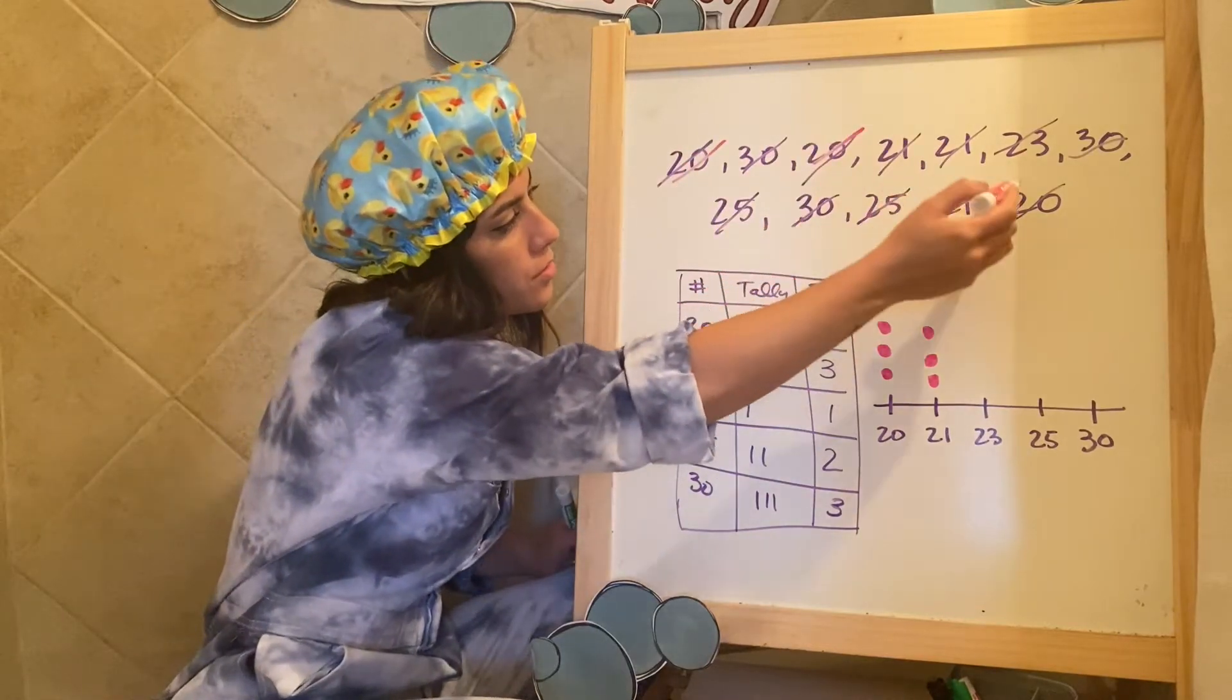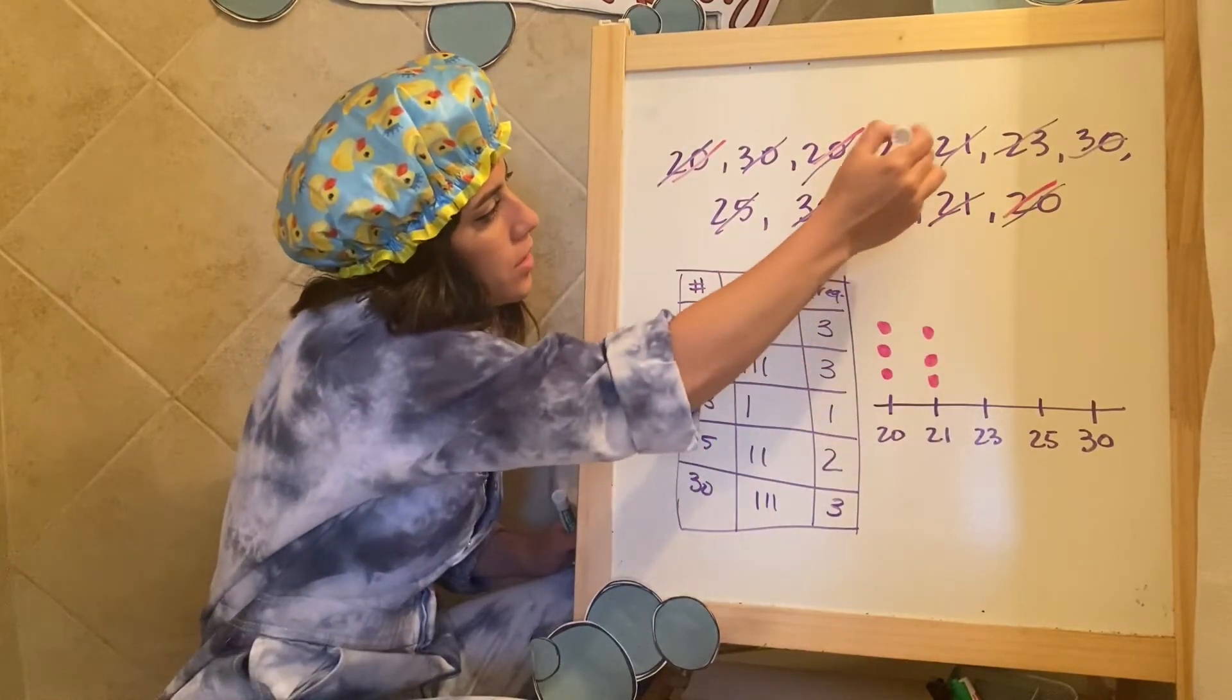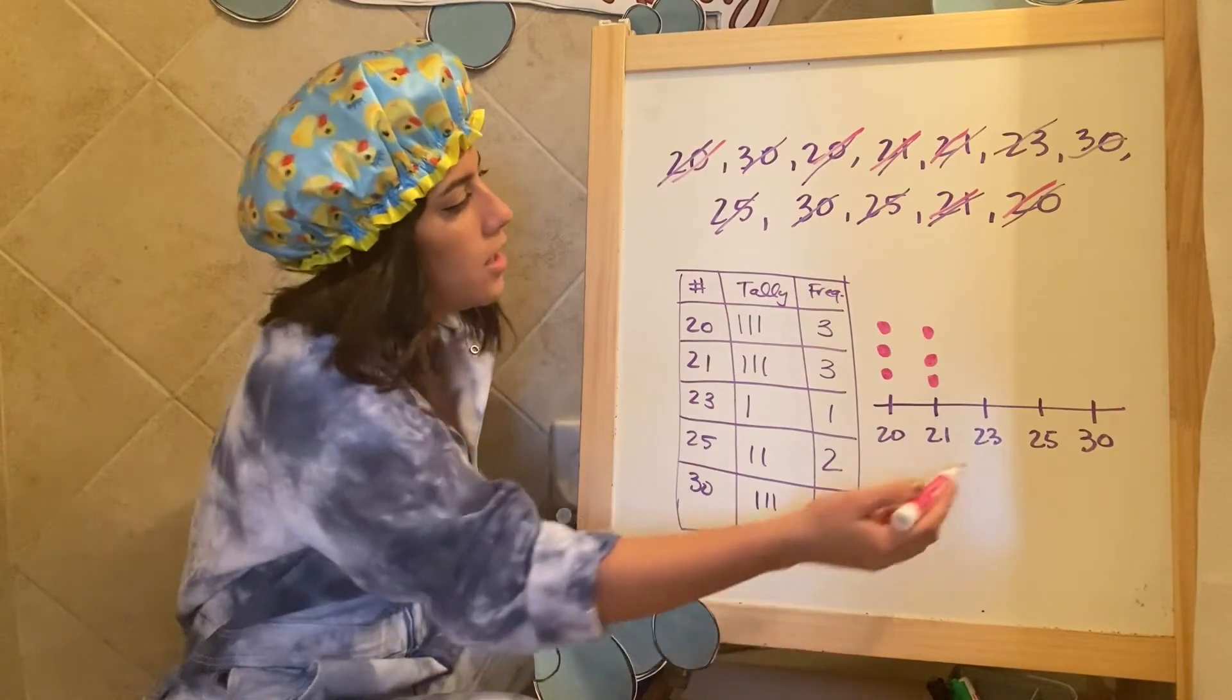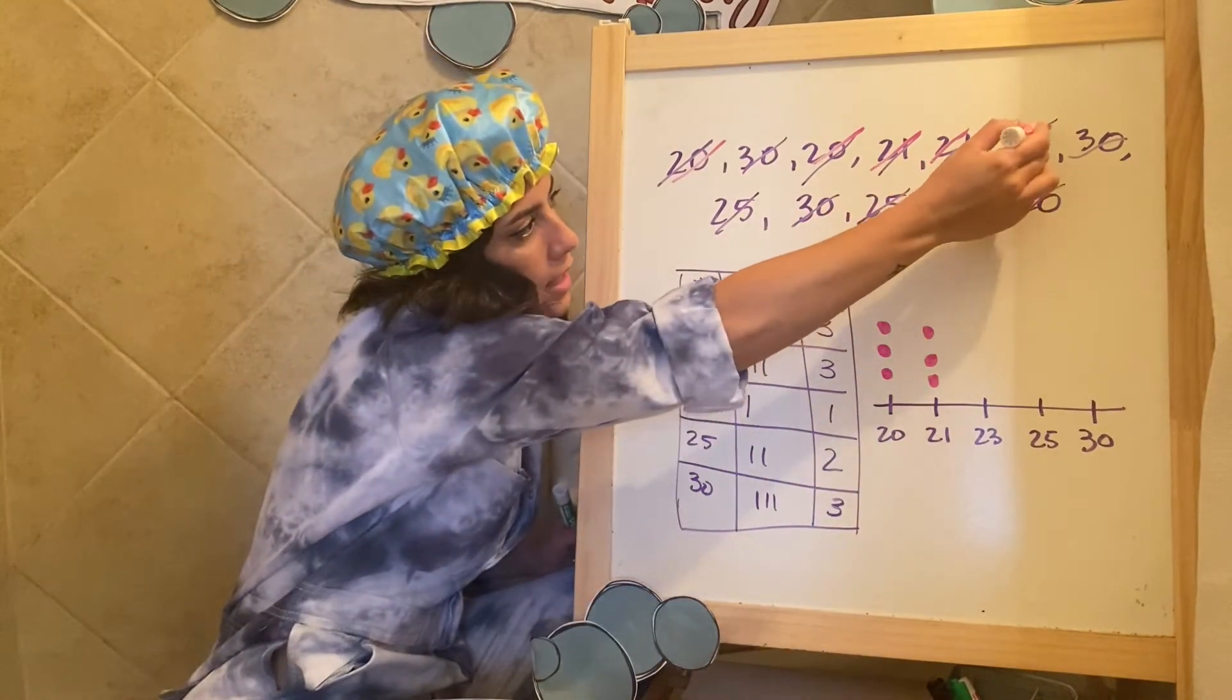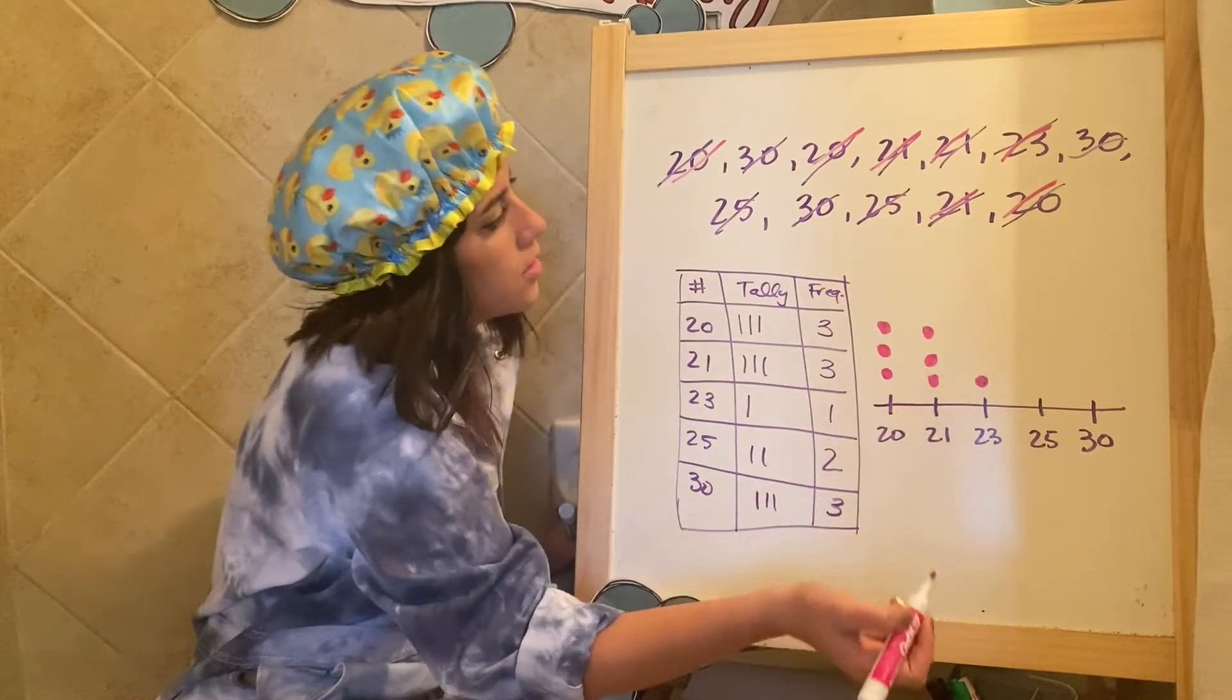So 20, I had done one, two, three, 21, one, two, three. I can always double check 23. I only had one. Okay.